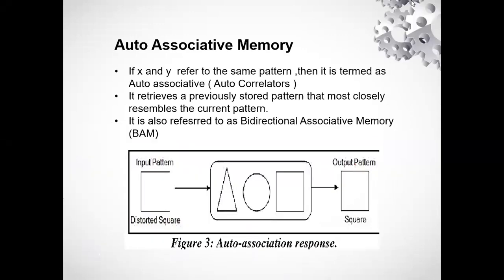So first, what is auto associative memory? As I mentioned in earlier sessions, just as a review: whenever we have a pair X and Y, they both refer to the same pattern. That means the input and the output have the same value, but the difference is the input is in some distorted form and we get the output which is actually stored in the database.